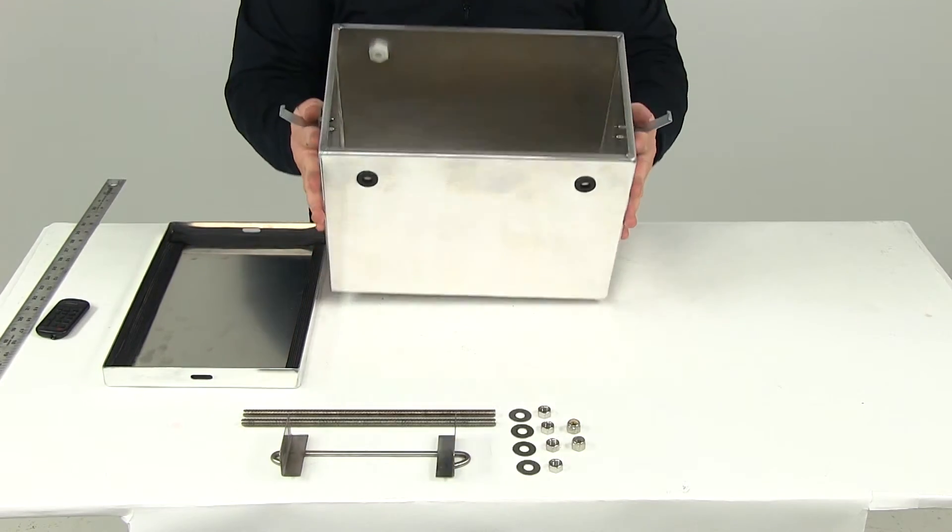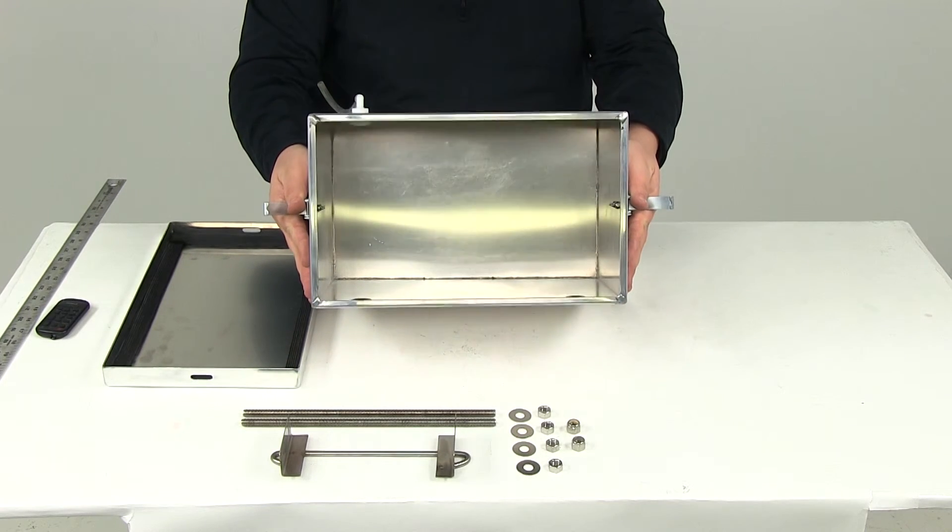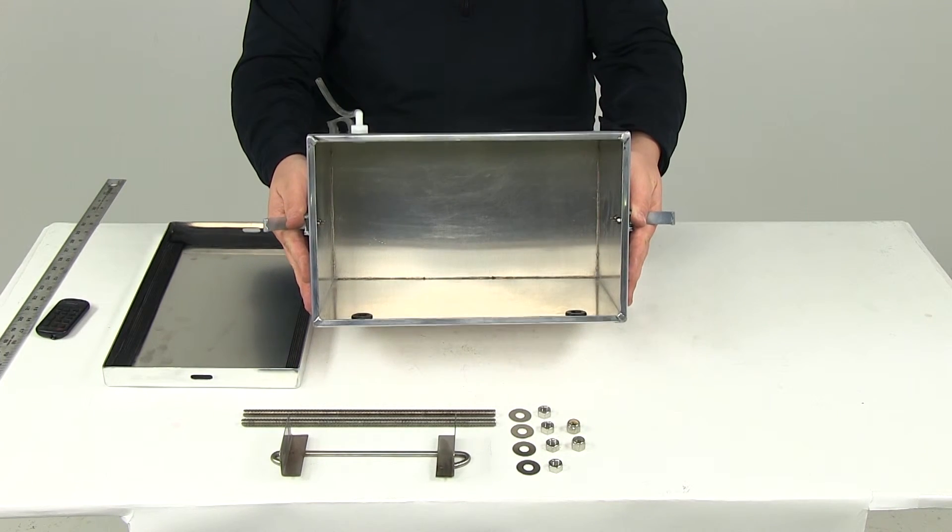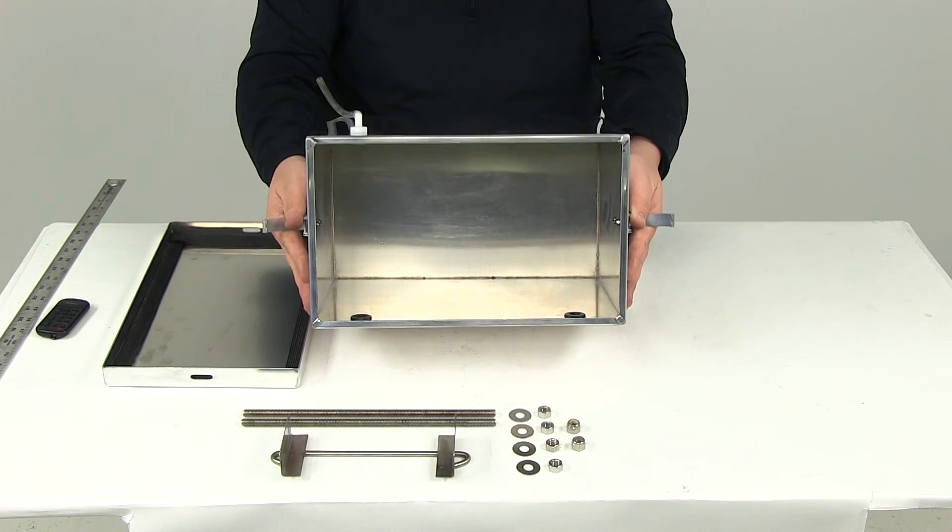When it comes to the internal dimensions of the box, it's going to give us an overall length of 13 and 7 eighths of an inch, by 8 and 3 eighths of an inch wide, by 10 and a quarter of an inch tall.